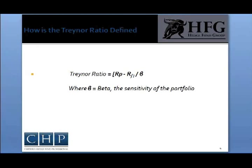The Treynor ratio equals the return on the portfolio minus the risk-free rate of return — which in general is a U.S. Treasury bill — divided by the beta of the portfolio, instead of the standard deviation of the returns of the portfolio.